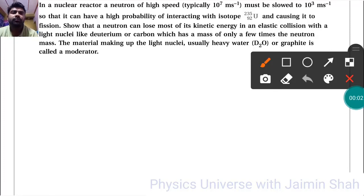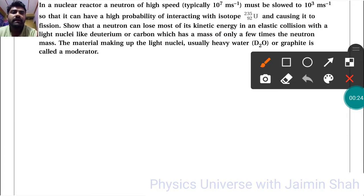In a nuclear reactor, a neutron of high speed, typically 10^7 ms^-1, must be slowed to 10^3 ms^-1 so that it can have a high probability of interacting with isotope uranium-235 and causing it to fission. A neutron can lose most of its kinetic energy in an elastic collision with a light nuclei like deuterium or carbon, which has a mass of only a few times the neutron mass. The material making up the light nuclei, usually heavy water (D₂O) or graphite, is called a moderator.